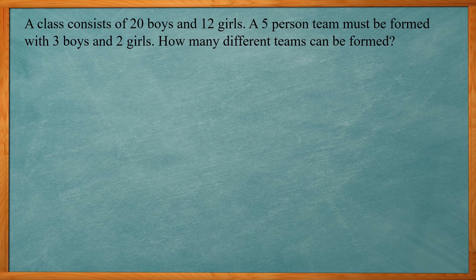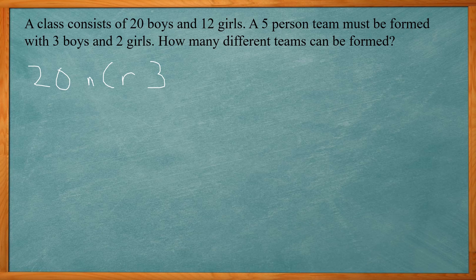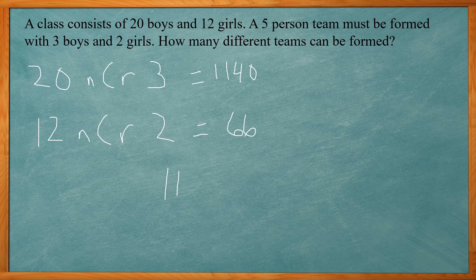A class has 20 boys and 12 girls. A five-person team must be formed with three boys and two girls. How many different teams can be formed? We set up two combinations since there's no order within the groups. For boys: 20 choose 3 (20C3), and for girls: 12 choose 2 (12C2). Using a calculator, 20C3 equals 1,140 and 12C2 equals 66. Multiply these together to get 75,240.